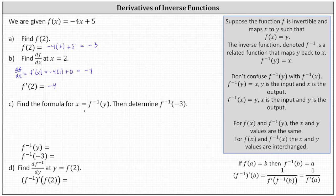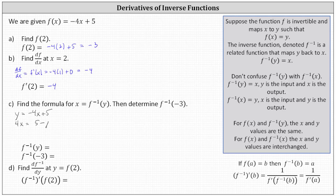For part c, we're asked to find the formula for x equals f inverse of y, then determine f inverse of negative three. Notice here we're finding the inverse function as a function of y. To do this, we begin with f of x equals negative four x plus five, replace f of x with y, and then solve for x. We begin with y equals negative four x plus five. To solve for x, we add four x to both sides and subtract y from both sides, which gives us four x equals five minus y. Dividing both sides by four, we have x equals five-fourths minus one-fourth y. x is f inverse of y, so f inverse of y is five-fourths minus one-fourth y.